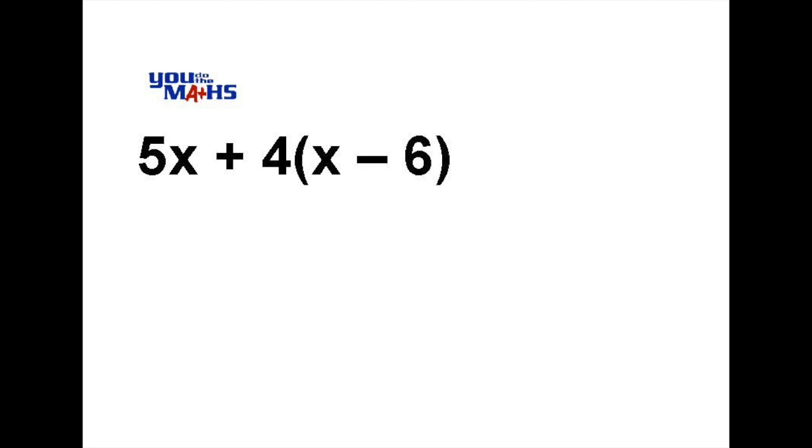But there's 4 multiplied by the bracket, so the first thing we need to do is do the 4 multiplied by the bracket and then look to simplify with adding the 5x.